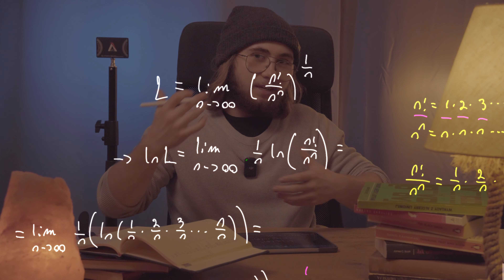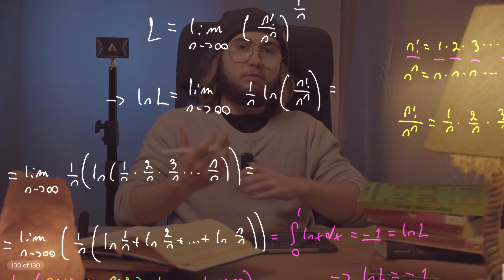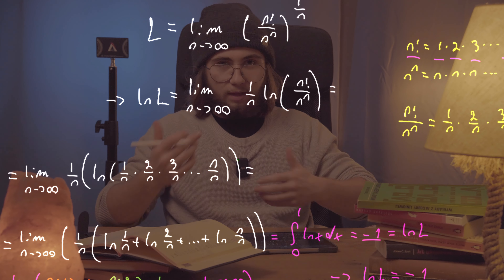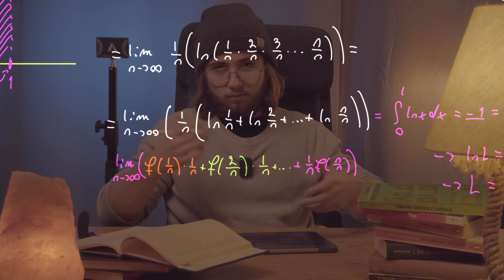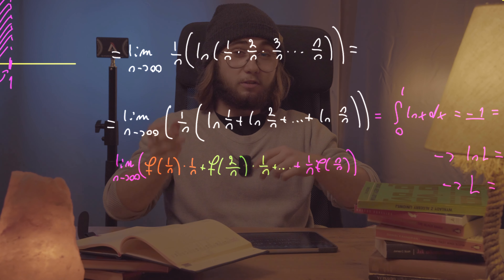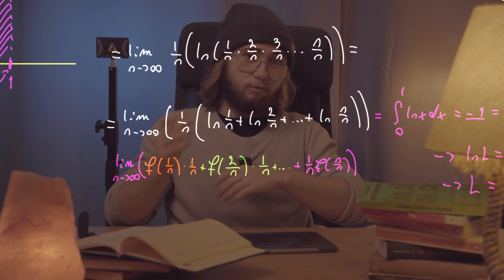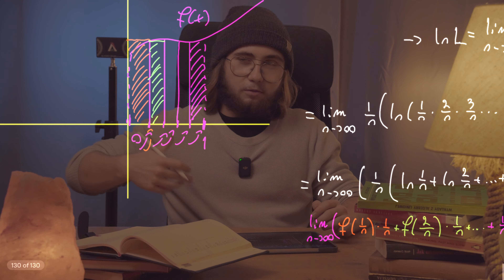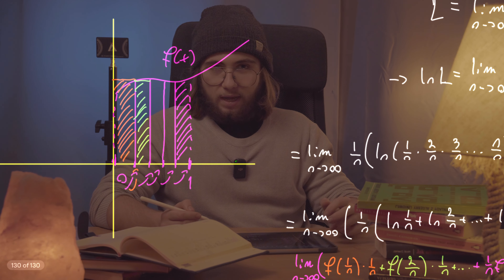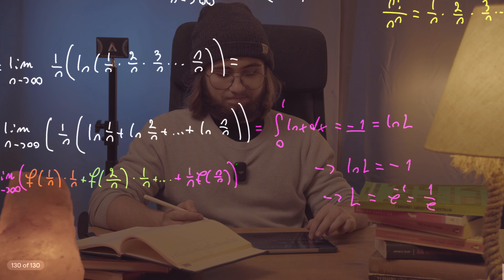To summarize: we denoted the limit as L, took the natural log to get ln(L) as a limit of a natural log, split the quotient of n factorial and n to the n into smaller fractions, applied log properties to get a sum, interpreted that sum as a Riemann sum for ln(x) on [0,1], and evaluated the resulting integral to get L = 1/e. I hope you enjoyed this video — see you in the next one!